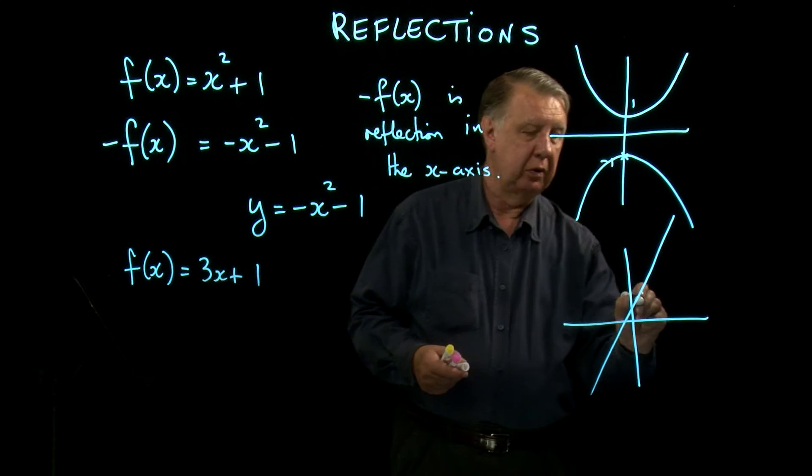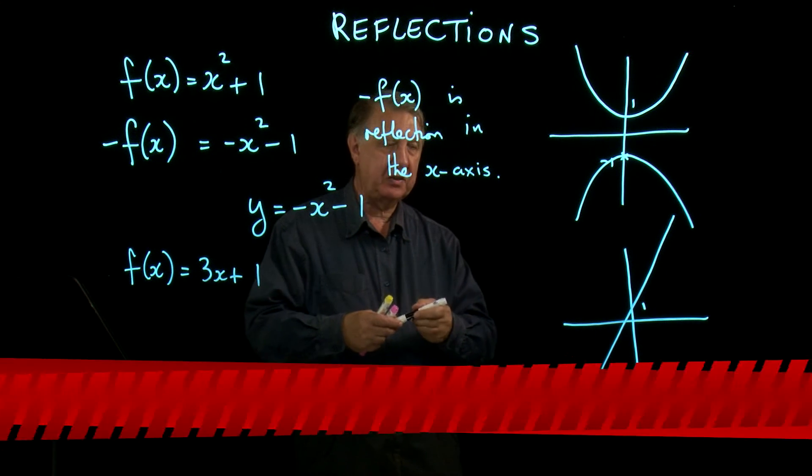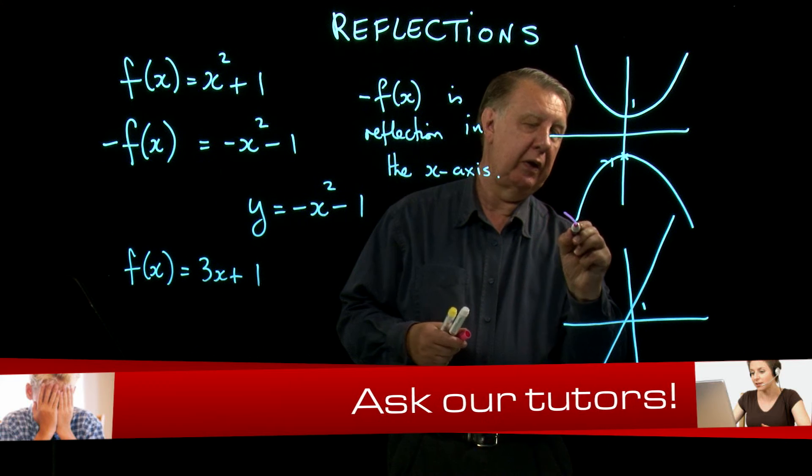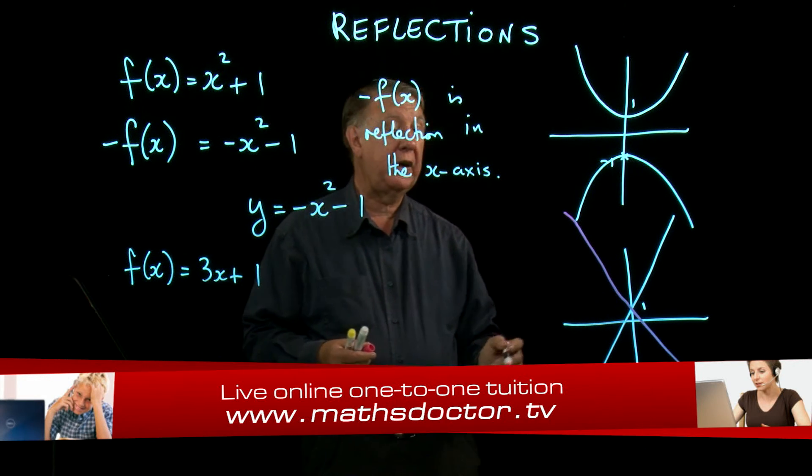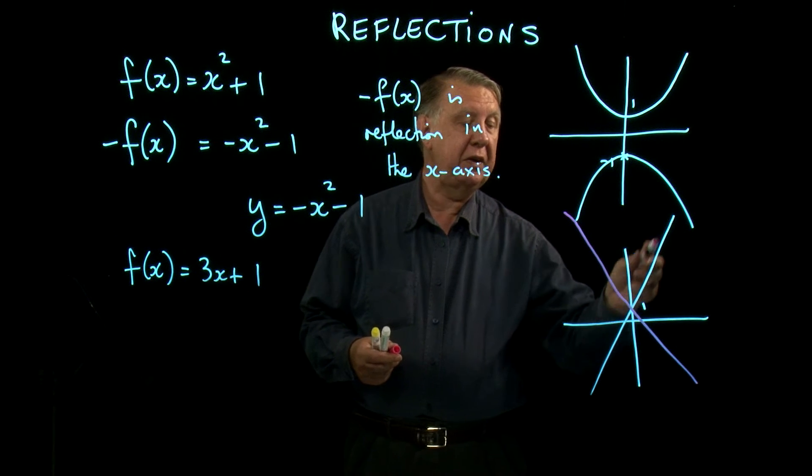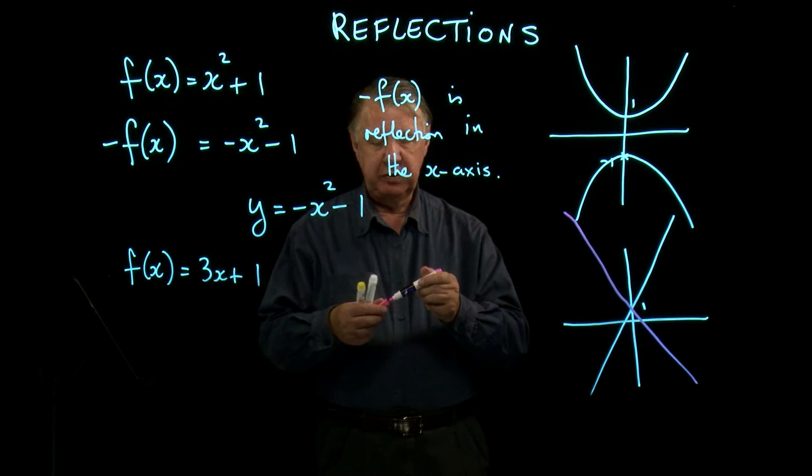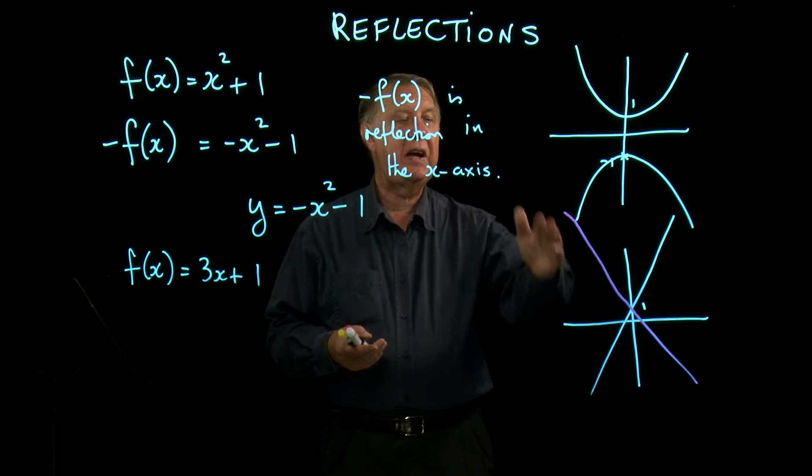So that goes through 1. Well, if I reflect that line, then it's going to do that. So it's still going to go through 1. But the gradient is now in the opposite direction, but the same degree of steepness. In other words, it'll be negative 3.